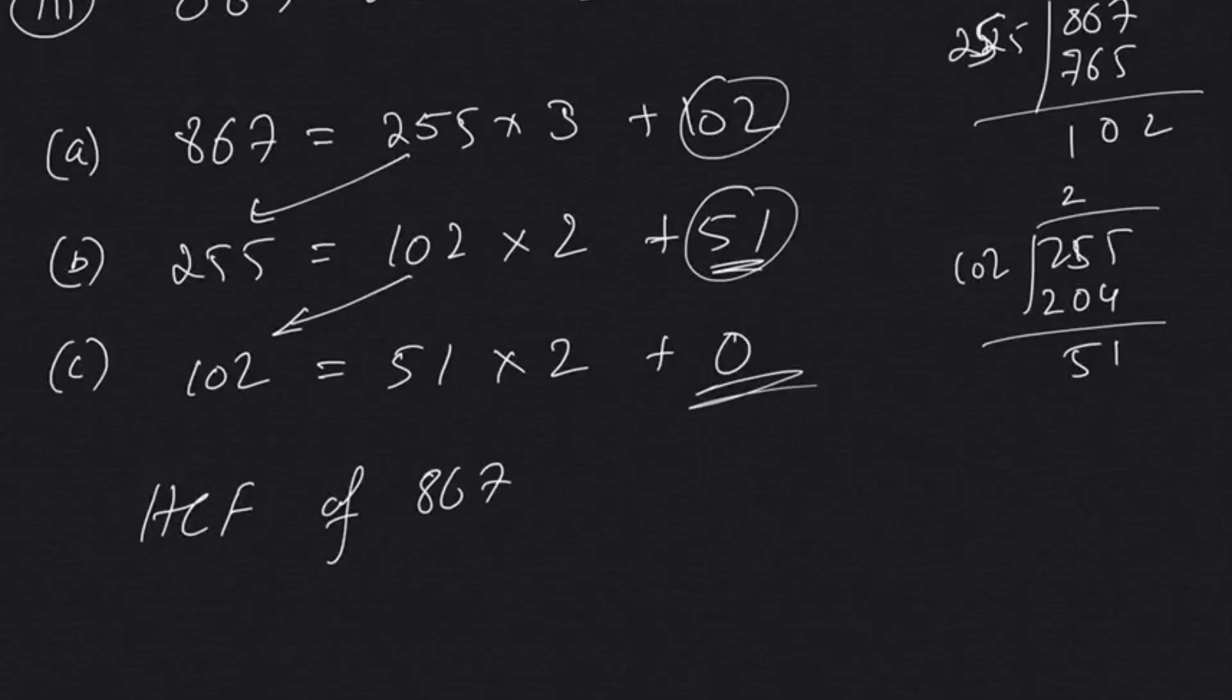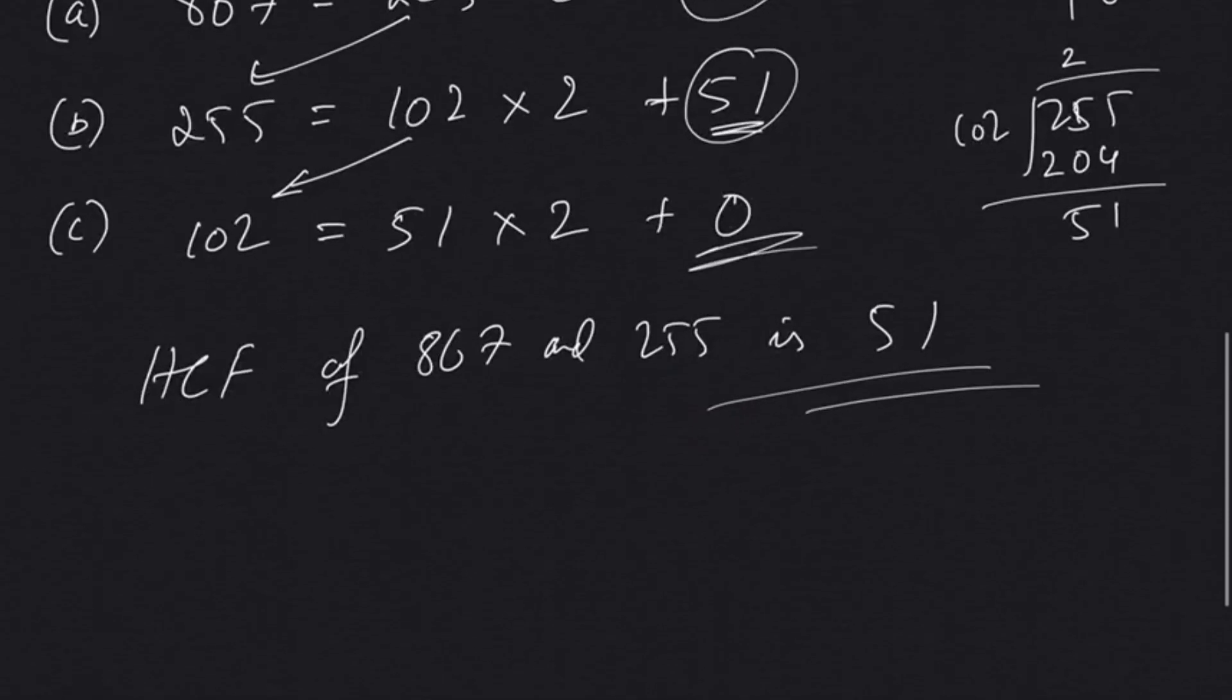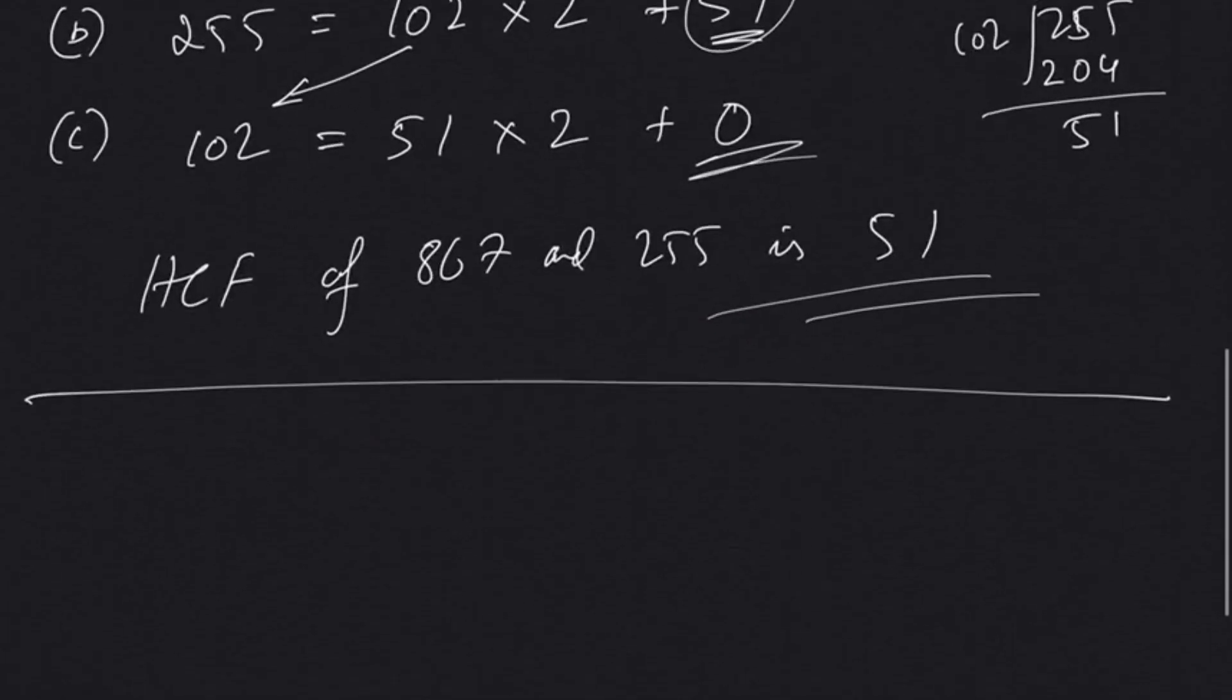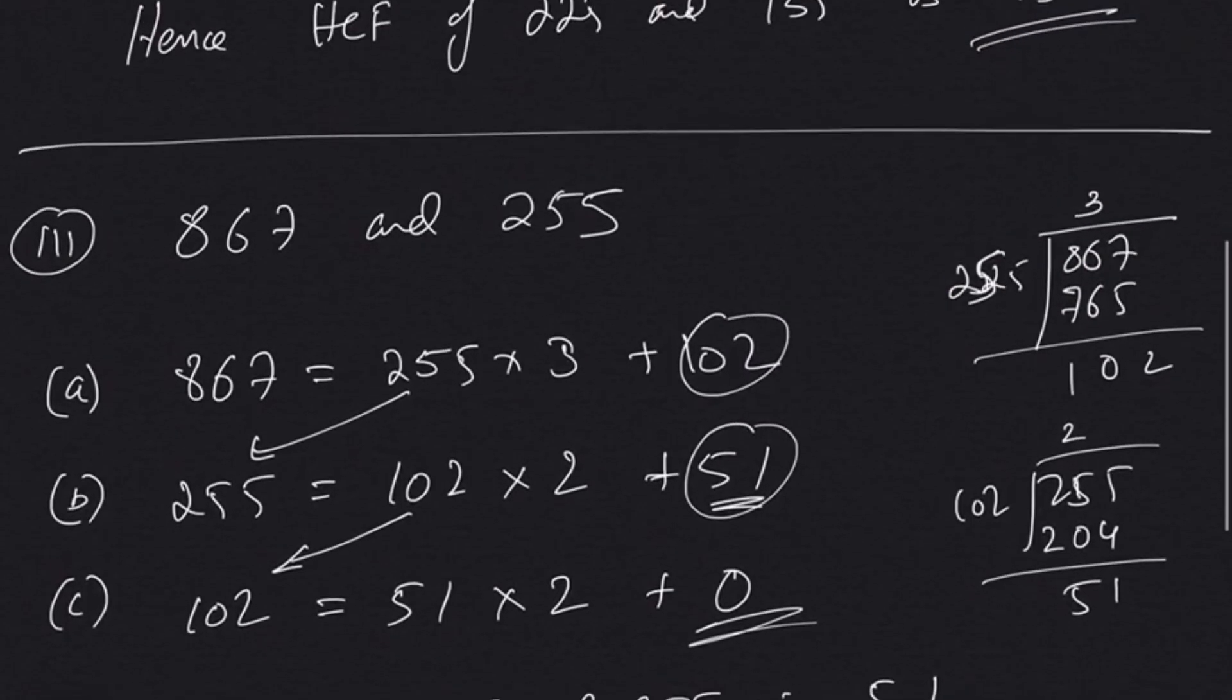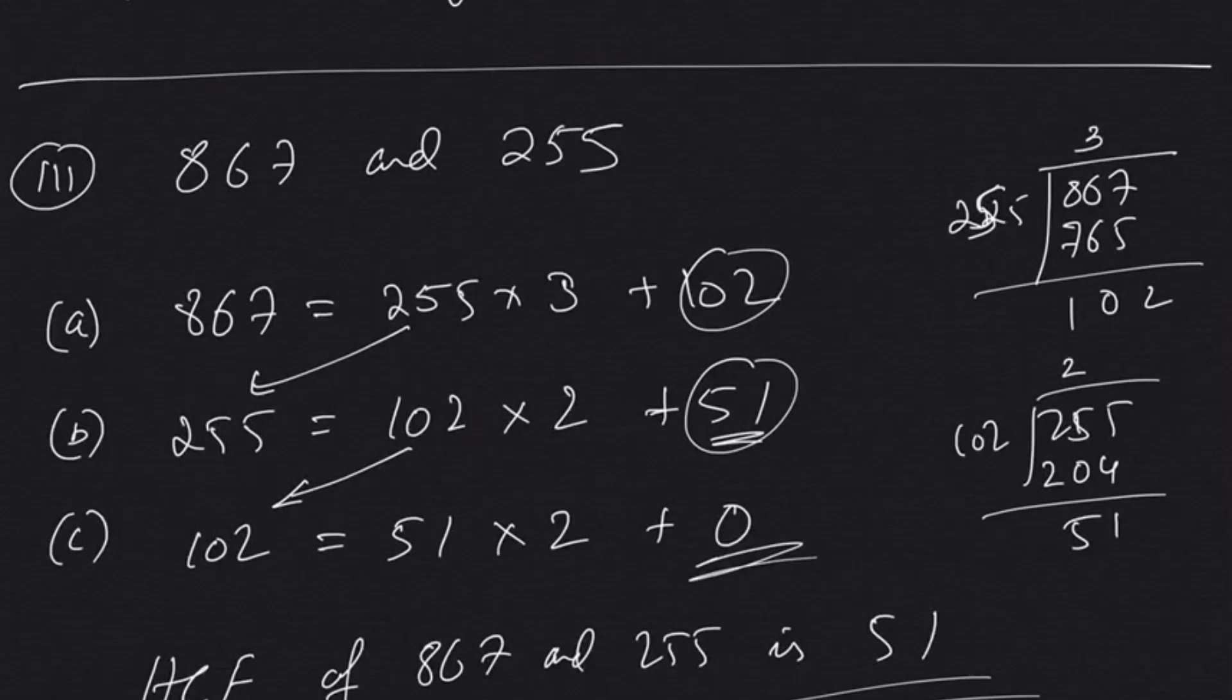So now since we have the remainder here as 0, our HCF of 867 and 255 will be 51. So that's how simple it is to use Euclid's algorithm to find out the HCF.